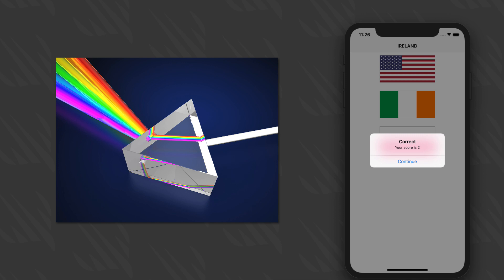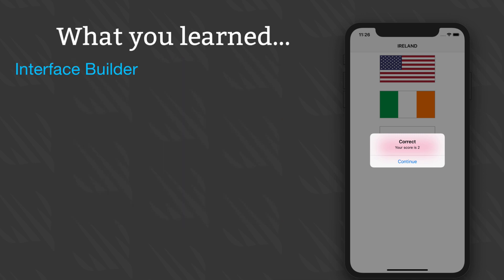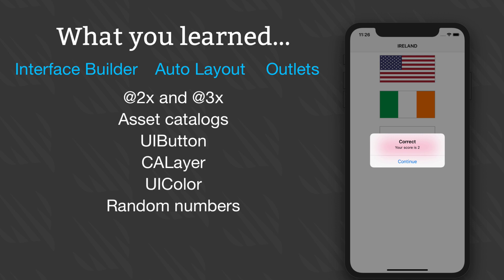Yes, in this project we went back to Interface Builder, Auto Layout, outlets, and other things, but at the same time you've learned about @2x and @3x images, asset catalogs, UI buttons, CALayer, UIColor, random numbers, actions, UIAlertController, and more — and you've got a finished game too.